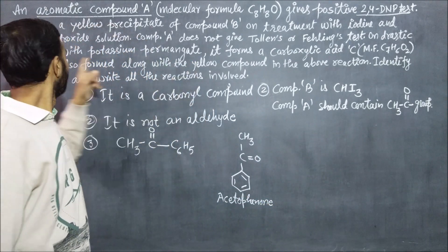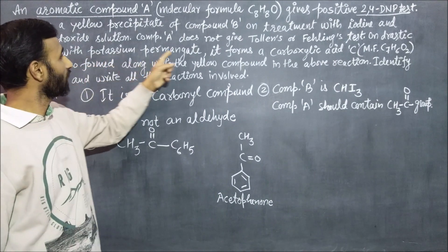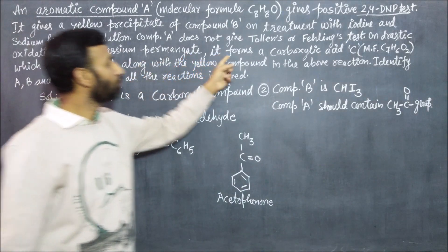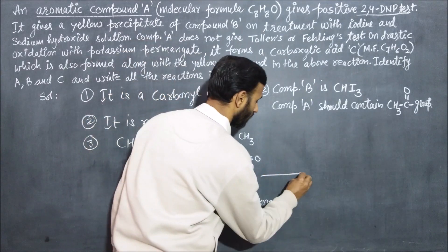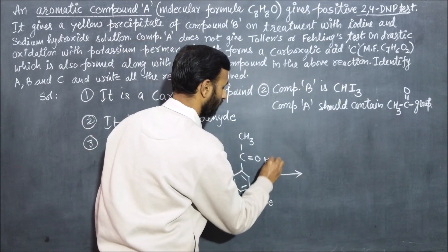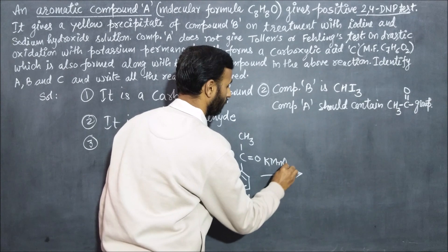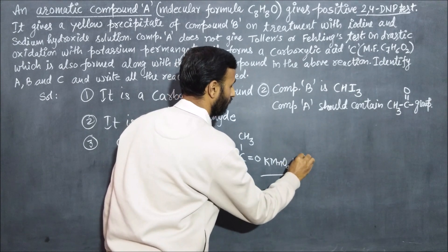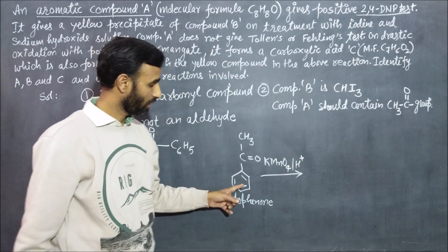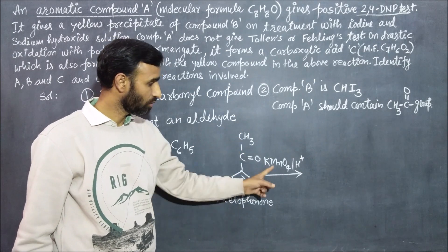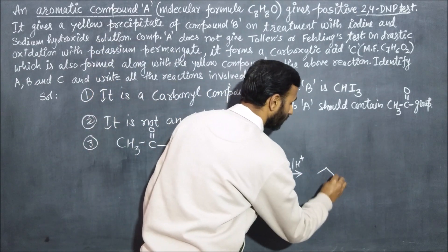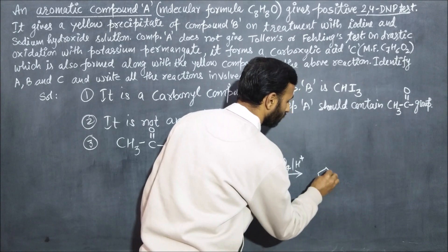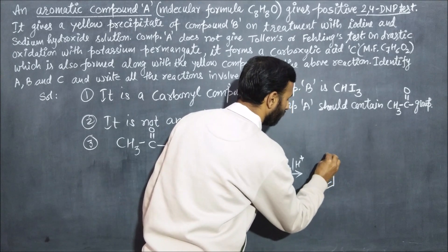On drastic oxidation with potassium permanganate, it forms a carboxylic acid. When oxidized by this strong oxidizing agent, only the carbon directly attached to the ring is left.